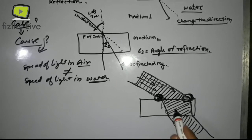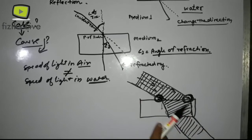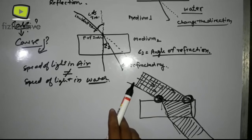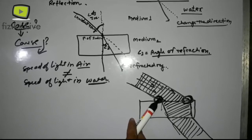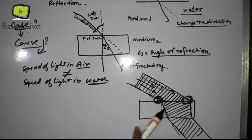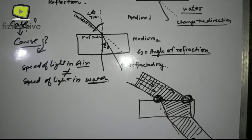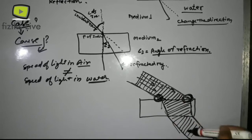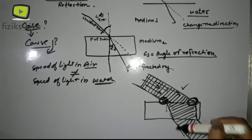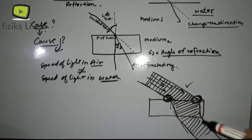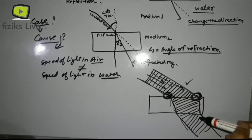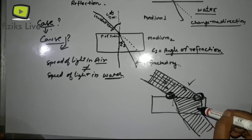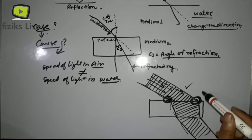The light changes its path — direction changes this way. This particle enters and changes the path. In the case of refraction, when light enters from one medium to another, it changes direction. In our next video we will talk about rare and denser mediums.